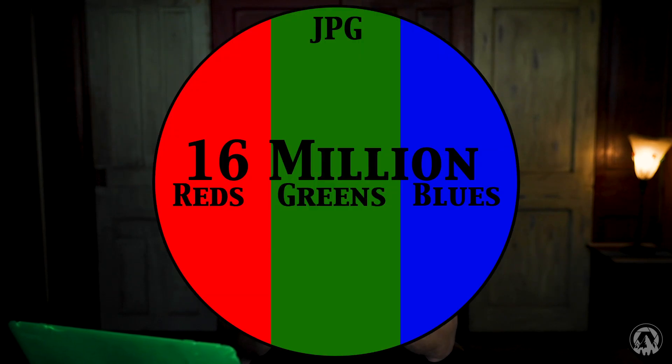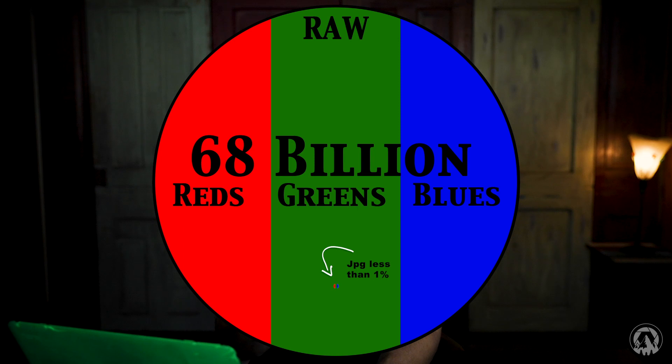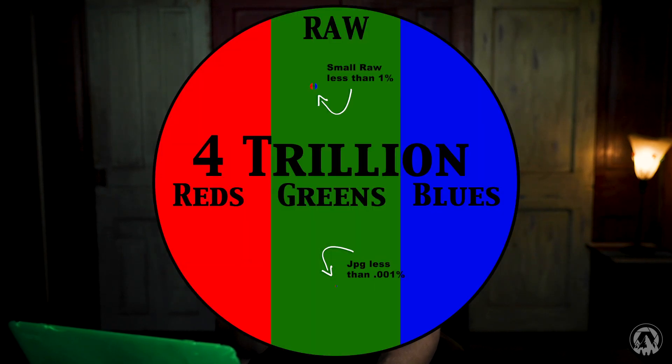Without getting too technical, a JPEG can record up to 16 million colors — reds, greens, and blues in combinations. That is a ton of colors. But to give you the comparison, a RAW format can record up to 68 billion — with a B — colors, up to 4 trillion colors, depending on the file type. That is a huge difference. And that also explains the size difference, but it also shows you the capabilities of the two different file types.